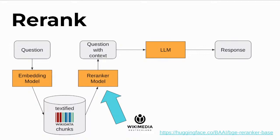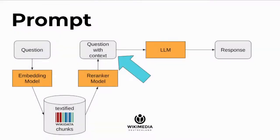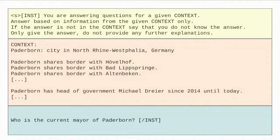Now we have the question with context. The prompt starts with a system instruction telling the language model to answer only based on the given context, and to say it doesn't know if the answer isn't there — this is prompt engineering. Then we give the context, which is the chunks retrieved from our database, and finally the actual question entered by the user: 'Who is the current mayor of Paderborn?'